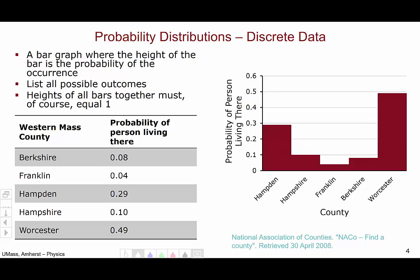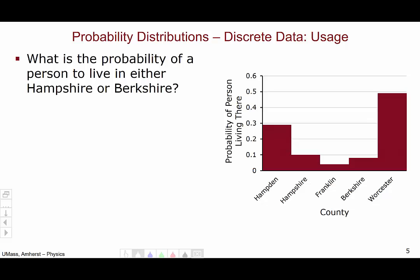All possible outcomes are in fact listed. Since all possible outcomes are listed, the heights of all bars together must equal one because the probability of a person who lives in western mass living in one of these five counties is of course 100%. Let's think about how to use these types of graphs.